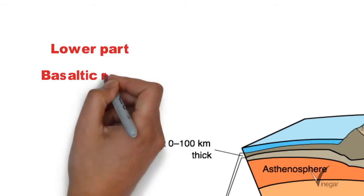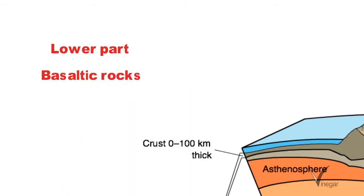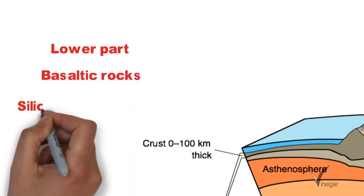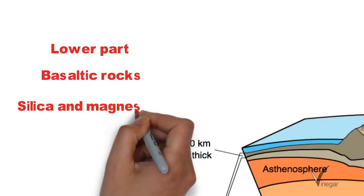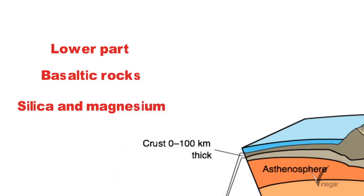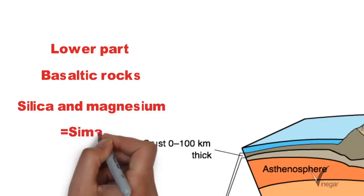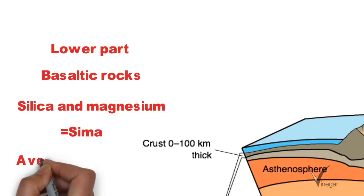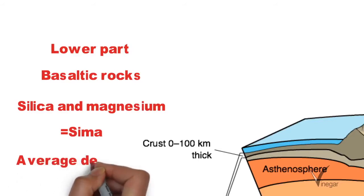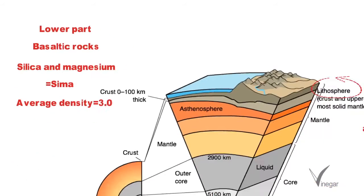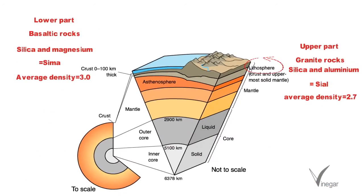The lower part is a continuous zone of denser basaltic rocks, and our ocean floors are built out of this. It mainly consists of silica, iron, and magnesium, which is why it is also known as SEMA. Its average density is 3.0. Since SIAL is lighter or less dense compared to SEMA, we can say that the continents are sort of floating over the denser SEMA.